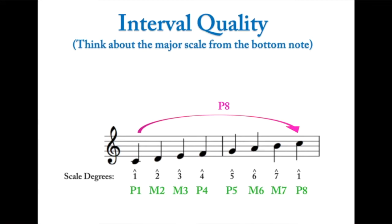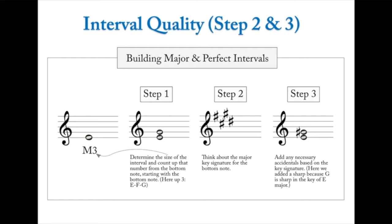This is really useful because if you know your major scales and key signatures, you can build any major or perfect interval just by thinking of that key. For example, to build a major third above E: first build the size - count up three to get some kind of G. Then think in the key of E major, which has four sharps. Apply that key signature to the G, giving you G sharp - and now you have a major third.